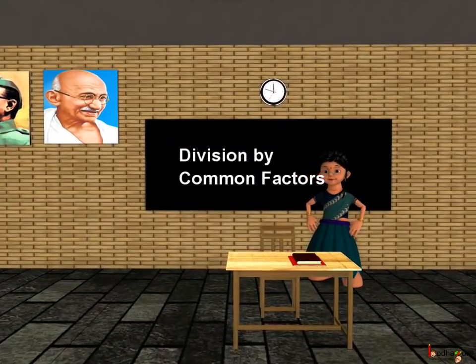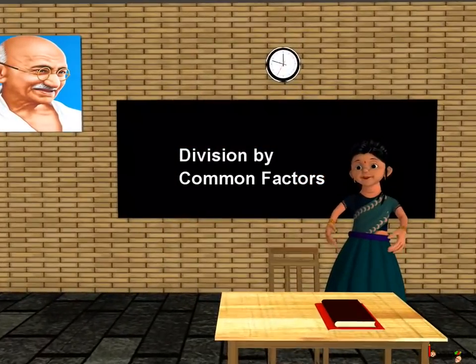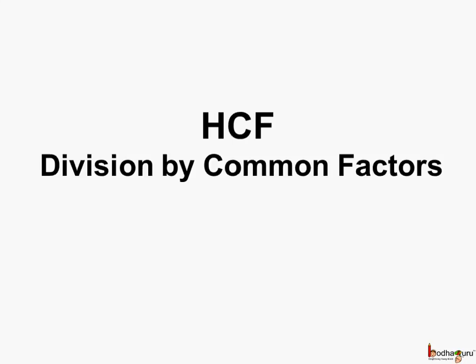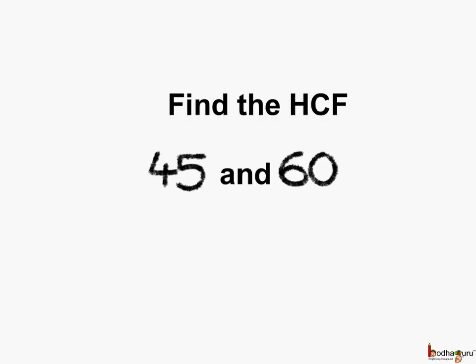Good morning children. Now you know how to find HCF using the prime factorization method. Now let us find HCF using another method which is called division by common factors. Let us find the HCF of 45 and 60 using the method called division by common factors.